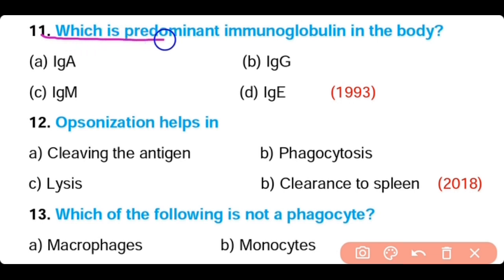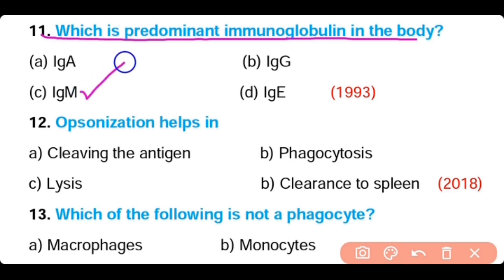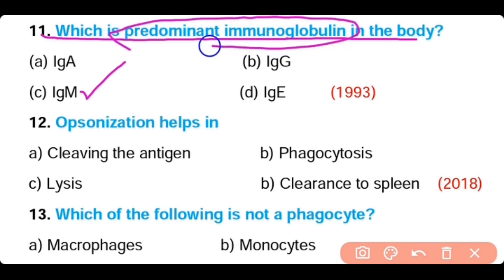Question number 11. Which is the predominant immunoglobulin in our body? IgA, IgG, IgM, or IgE. The correct answer is Option C. IgM is the predominant immunoglobulin in the body.